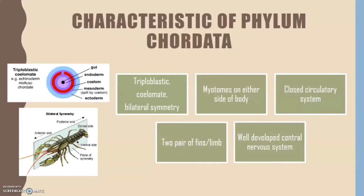Next, the characteristics of Phylum Chordata. First, the organisms in this phylum have triploblastic, coelomate, and bilateral symmetry bodies. Triploblastic means three germ layers: mesoderm, ectoderm, and endoderm. Coelom refers to animals that have a body cavity with complete lining derived from mesoderm. Bilateral symmetry is when opposite sides of the organism's body are similar. Second, they have myotomes on either side of the body and a closed circulatory system. They also have two pairs of fins and a well-developed central nervous system.